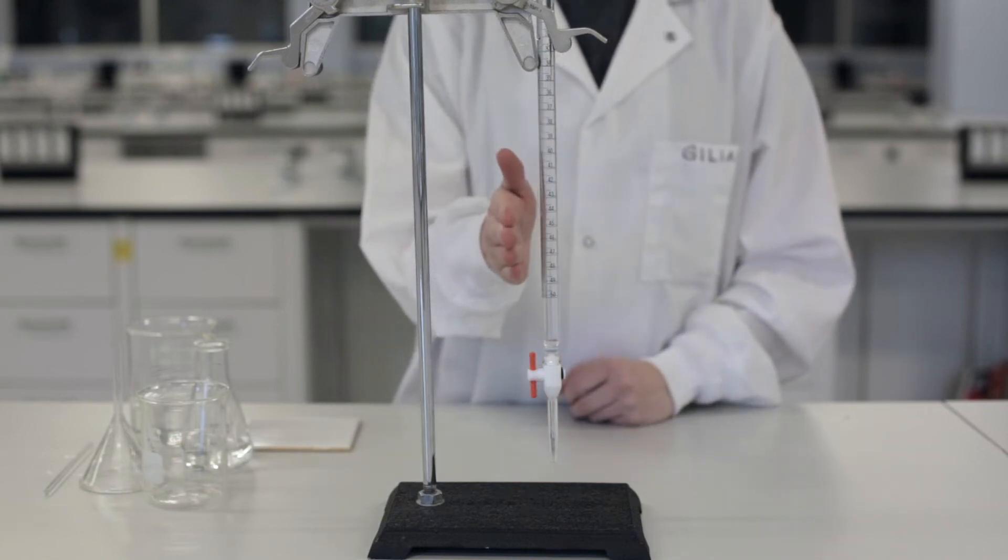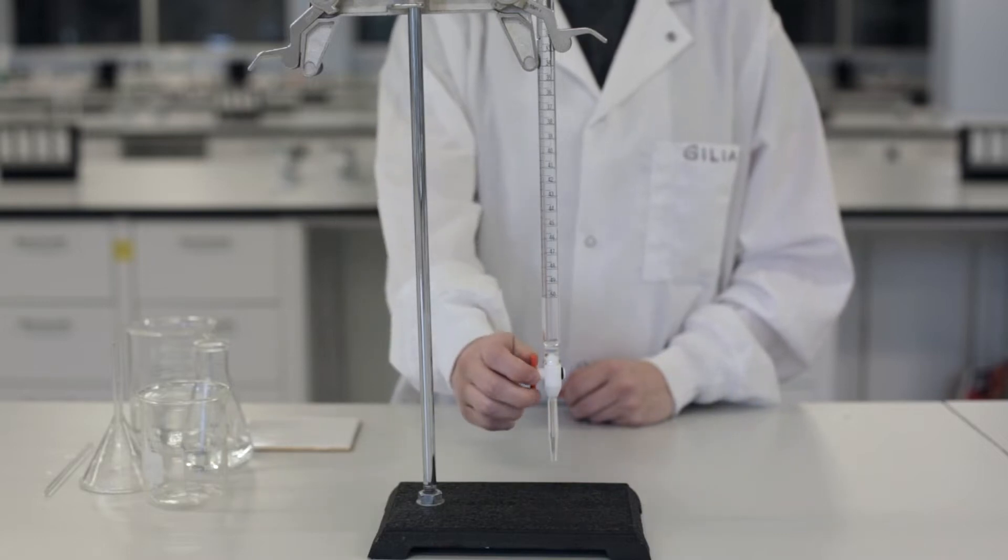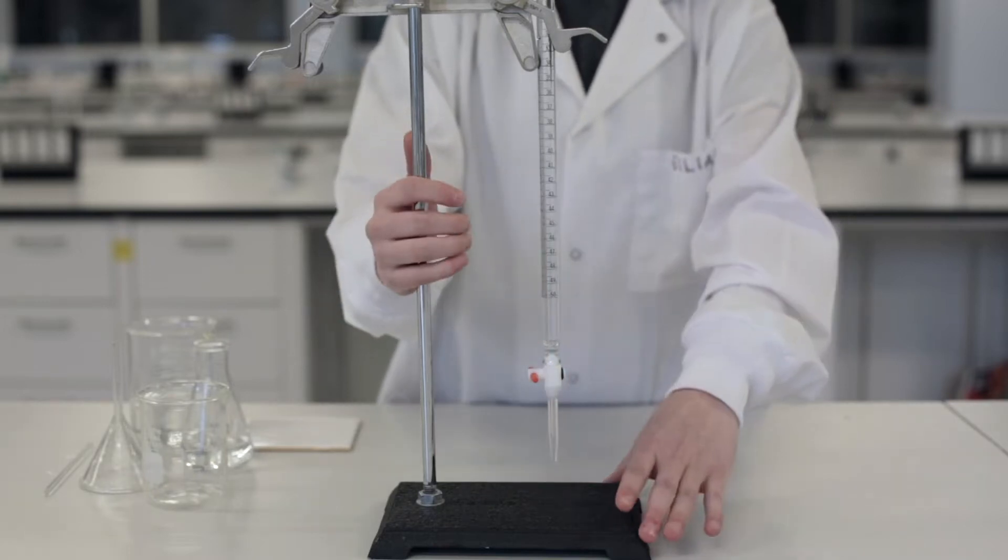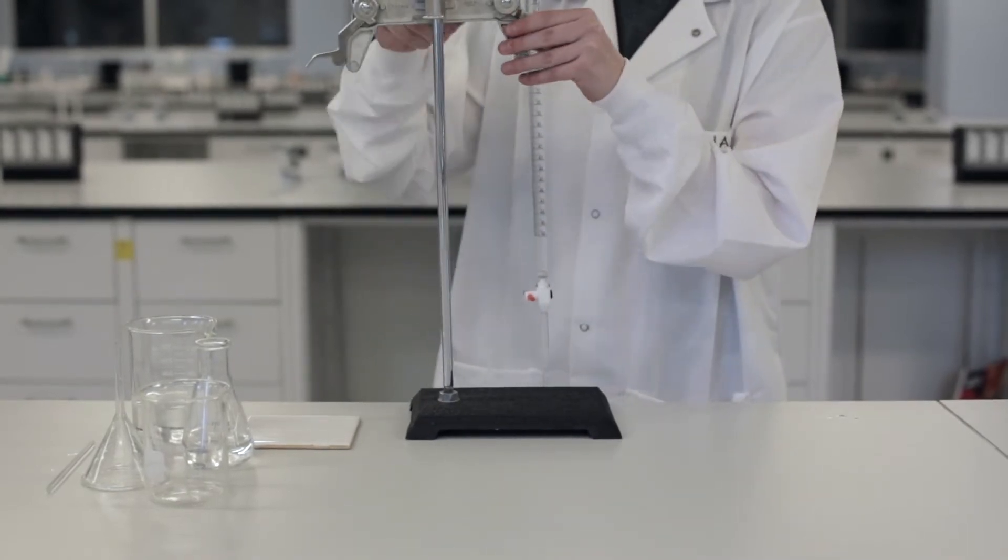Ensure your burette is clamped properly so it is straight and not leaning in any direction. Close your stopcock and position the burette so you can pour your titrant solution in below your eye level.